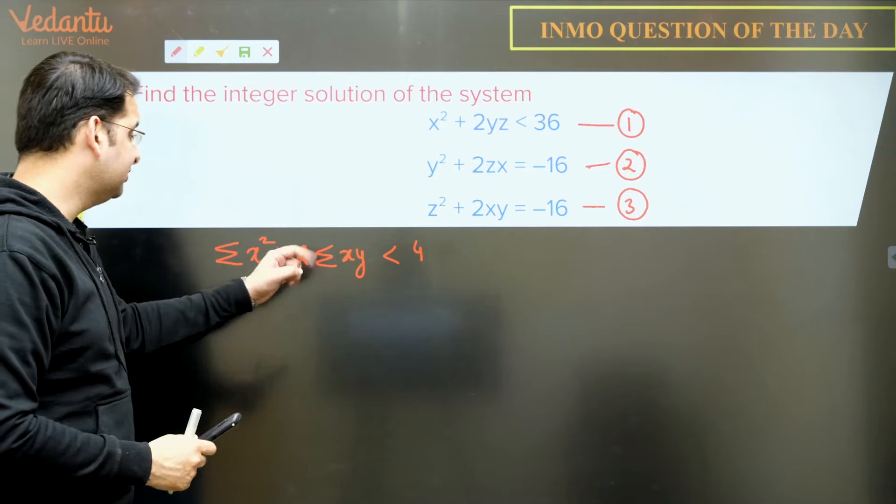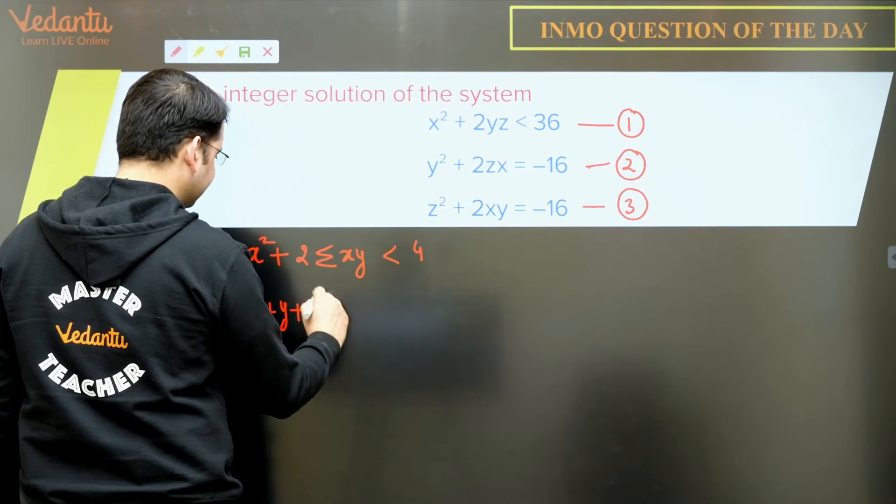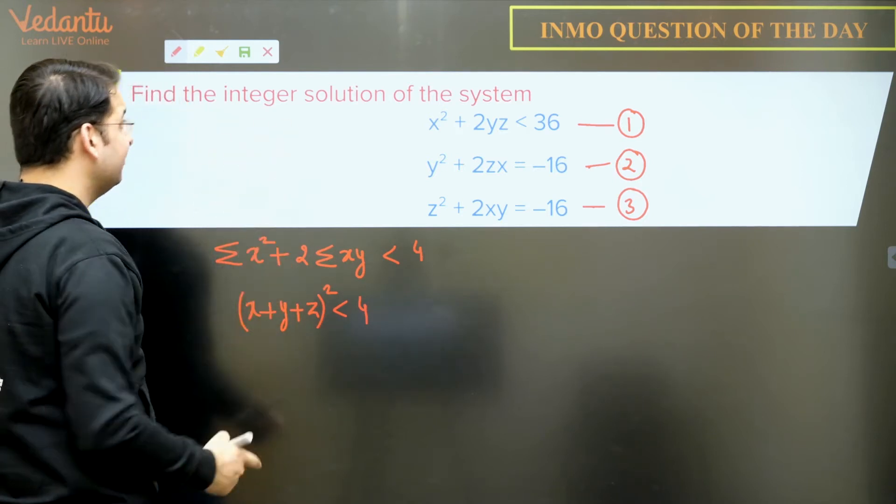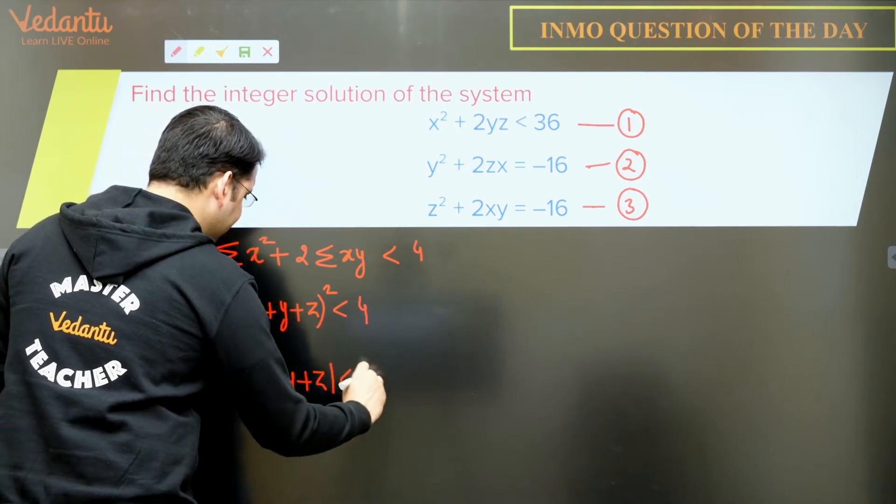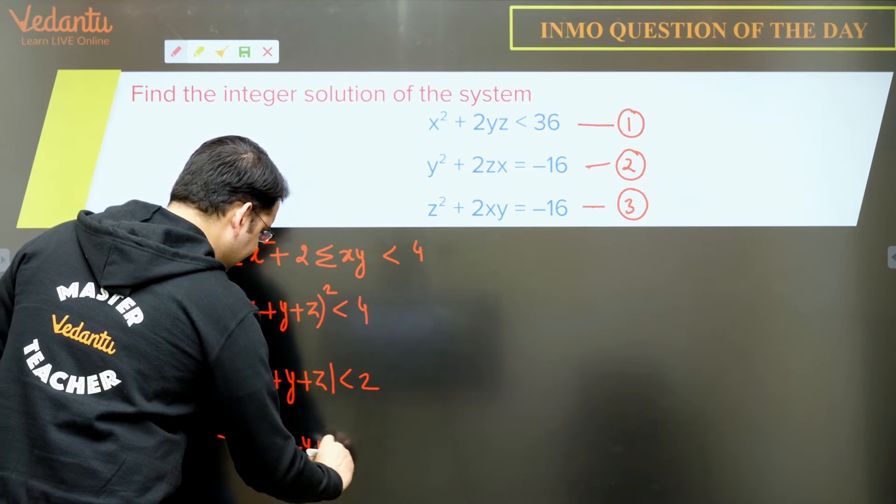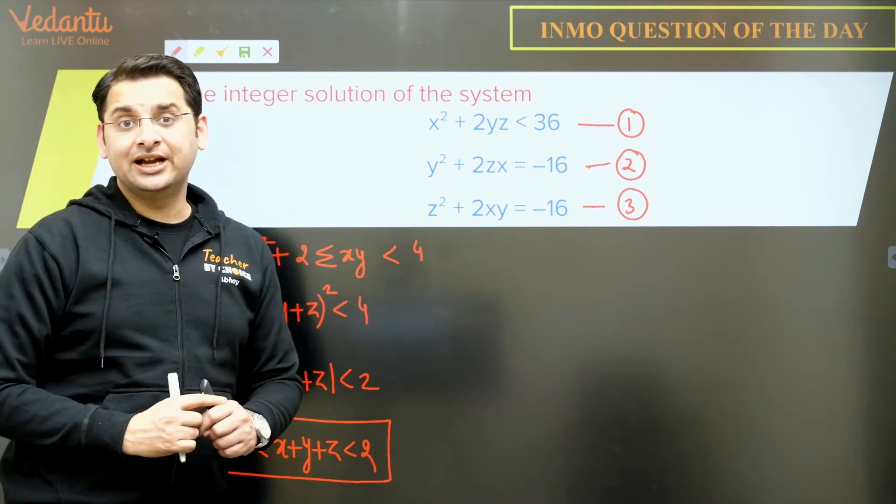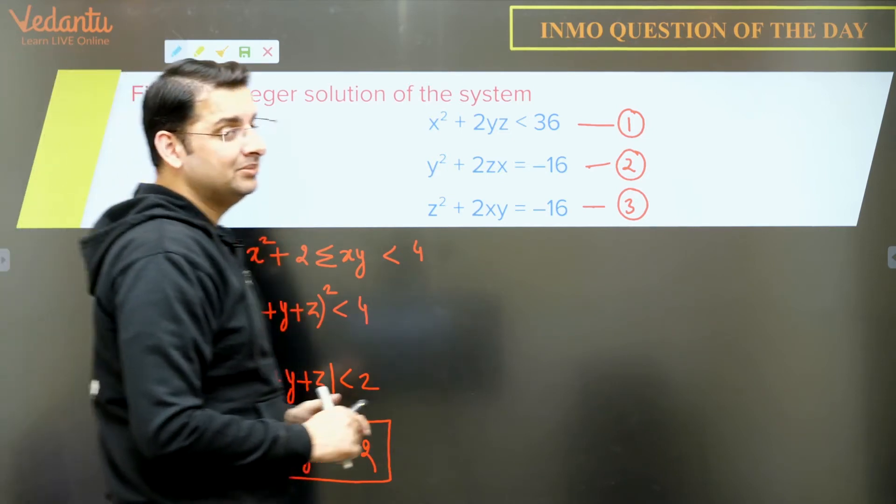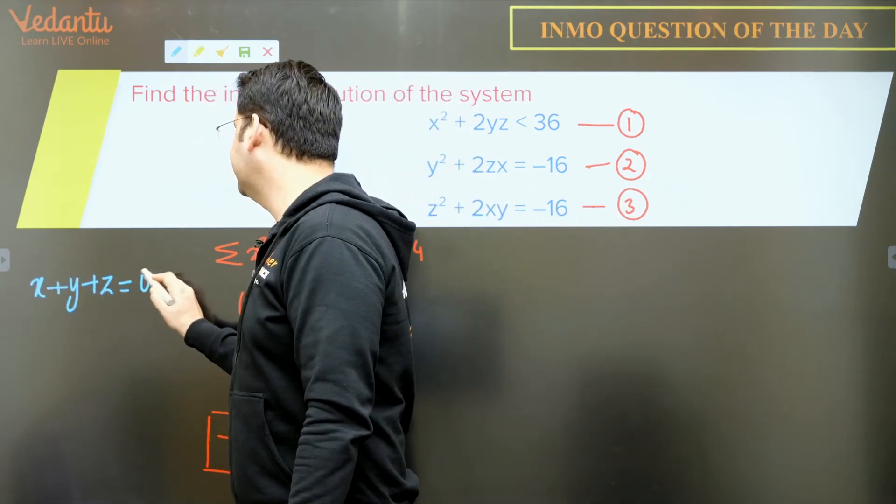So we have Σx² + 2Σxy will be less than 4. So x² + y² + z² + 2(xy + yz + zx) will be (x + y + z)² < 4. And if I take the positive square root on both the sides, because we've been asked of integral solutions, so |x + y + z| < 2 which gives us -2 < x + y + z < 2. Right, x and y and z are all integers and then x + y + z lies between -2 and 2. So this means we're left with very little possibilities, limited possibilities. So x + y + z can either be 0 or 1 or -1.